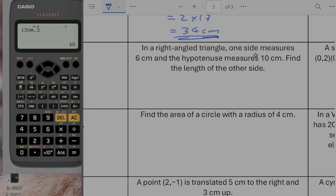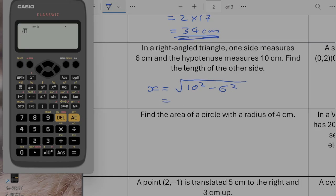In a right angle, one side measures 6 centimetres and the hypotenuse measures 10 centimetres. Find the length of the other side. So we're given the hypotenuse and we're given one of the shorter sides. So the missing side I'm going to call x and that's going to be equal to the square root of the hypotenuse. So 10 squared minus 6 squared. And I'll type it in like that. The square root of 10 squared minus 6 squared. So that gives us 8 centimetres.